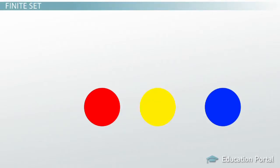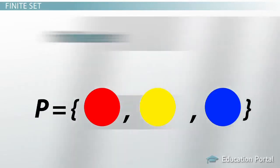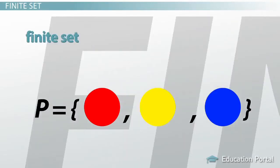Let's look at the set of primary colors: P = {red, yellow, blue}. We can say that set P is a finite set because it has a finite number of elements. Finite means we can count the number of elements. In this case, set P has three elements — red, yellow, and blue — so set P has a cardinality of three.